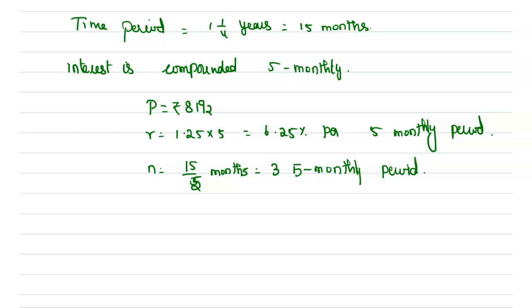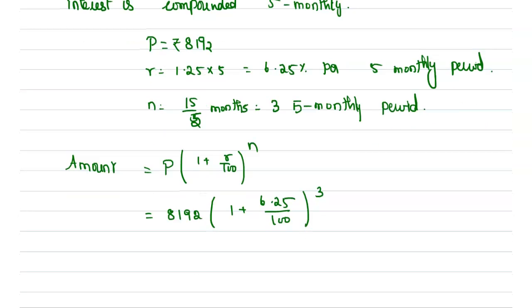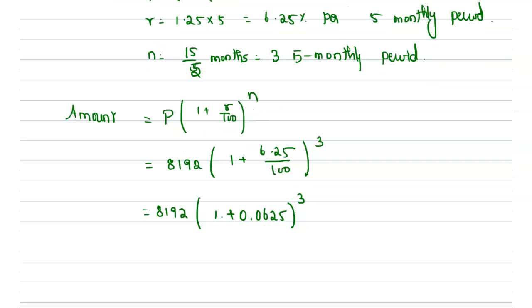Now we want to find the total amount first. The total amount formula is P into (1 plus r/100) to the power n. So which is 8192 multiplied by (1 plus 0.0625) to the power 3. Upon simplification we get the value as 9826, that is the total amount.